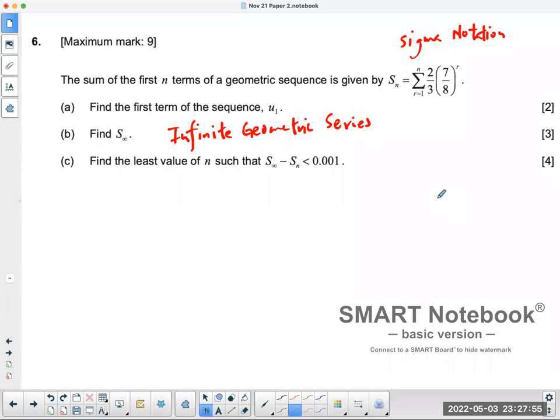First of all, understand what a sigma notation means. Sigma notation is a summation sign, so it's a sum. The r value starts at 1, goes to n. And every single term, you're going to sub in the r value into this general formula, which is 2/3 multiplied by (7/8) to the power of r.